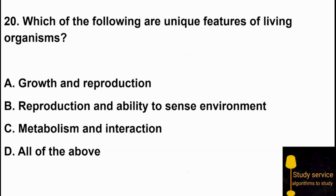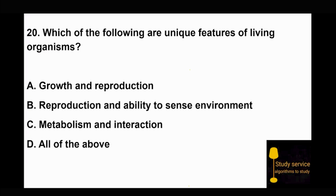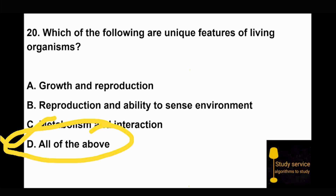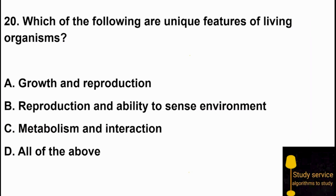Question 20: Which of the following are unique features of living organisms? Option A: growth and reproduction. Option B: reproduction and ability to sense environment. Option C: metabolism and interaction. Option D: all of the above. Living organisms need growth, reproduction, ability to sense the environment, metabolism, and interaction. So Option D, all of the above, is the right answer.